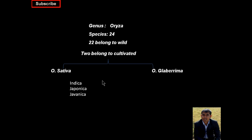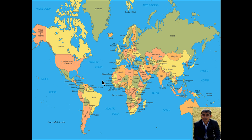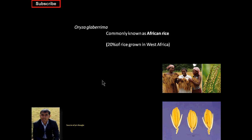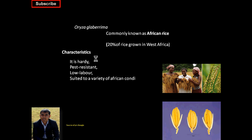Oryza sativa itself has three different subspecies: Indica, Japonica, and Javanica. If you want to see the geographical distribution of Oryza glaberrima, it is mainly confined to Western Africa. The rest of the Americas, Europe, and Asia are covered by Oryza sativa. Oryza glaberrima is commonly known as African rice and covers 20% of the rice-grown area in Africa. It is very hardy and can resist pests, requiring very low inputs because its economy is not very complex — that is why it can suit the adverse conditions of Africa. It also has a very distinct nutty flavor in the grain.